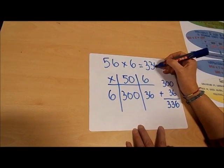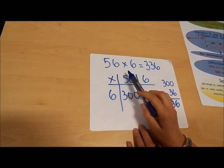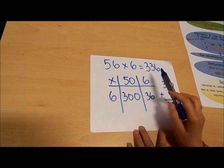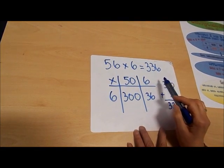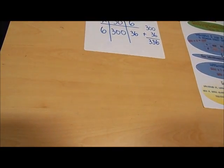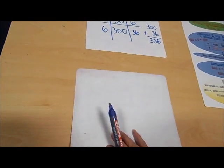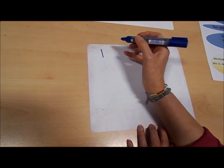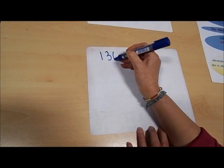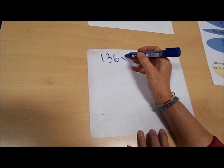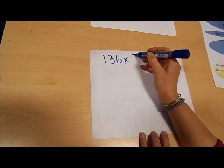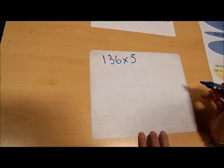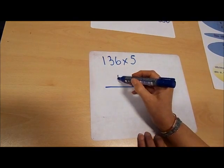So 56 multiplied by 6 equals 336. Now if we have a look at multiplying a three digit number, 136 multiplied by 5. As before, I'm going to start by drawing my grid.